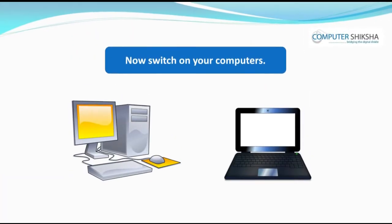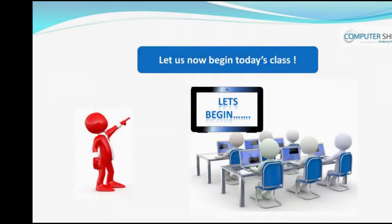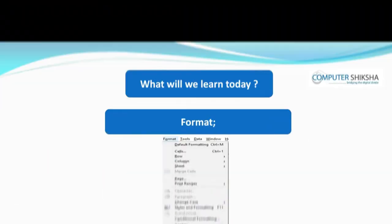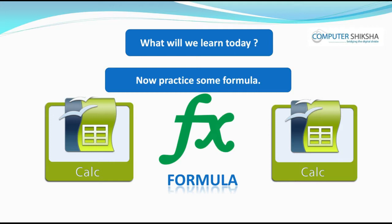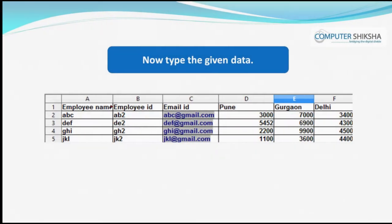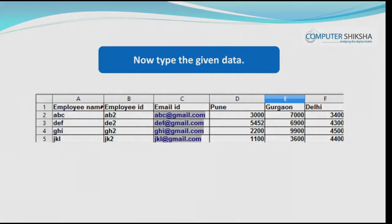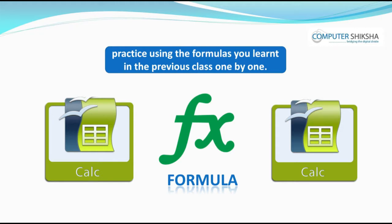Now all of you switch on your computers and using any of the methods taught to you, open your file. In today's class you will revise the options of the view, insert, and format menu learned during the last class and will practice using some formulas. Key in data on your spreadsheet — you can make columns for employee name, ID, and any other information you would like to use.